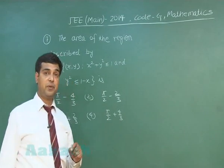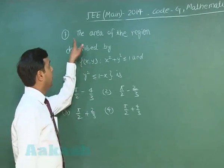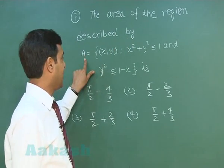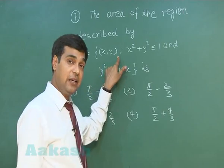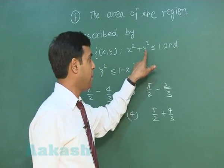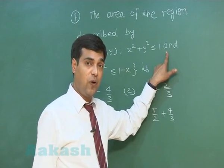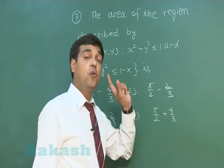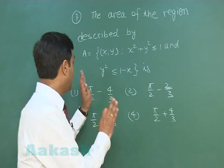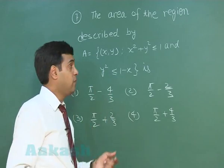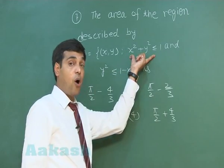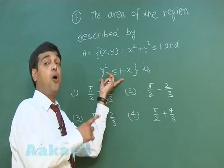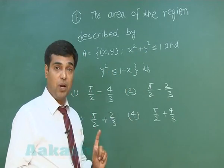Let us now move to question number 7. The area of the region described by A equals {x, y} such that x² + y² ≤ 1 and y² ≤ 1 - x. Set A involves the interior or boundary of the circle and the interior or boundary of the parabola.